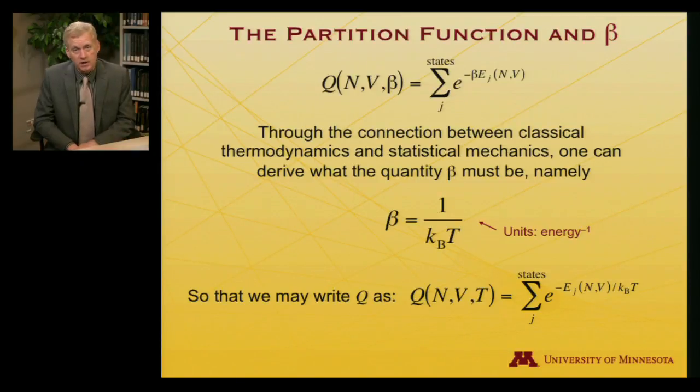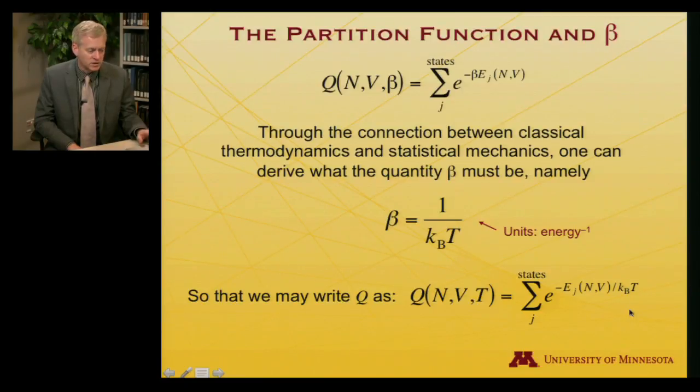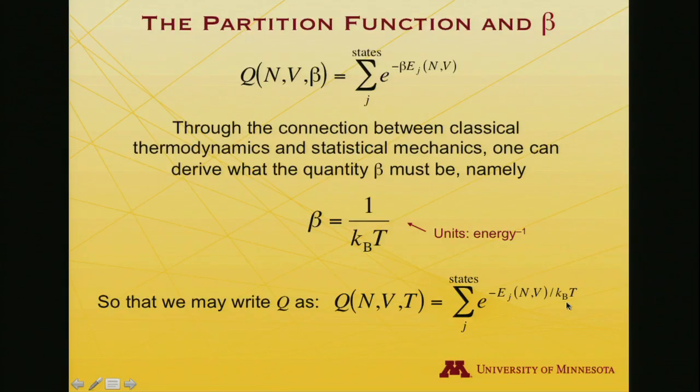So we could also write then completely equivalently that the partition function depends not on N, V, and beta, but on N, V, and T, because Boltzmann's constant is a constant. So beta varies with temperature. So if we hold beta fixed, we're holding the temperature fixed. That we sum over states e to the minus e sub j, now not multiplied times beta, but divided by kT. And I'll always indicate in formulae that it's Boltzmann's constant with a subscript capital B, but I'll nearly always just say k. I won't say kB. It takes too long.